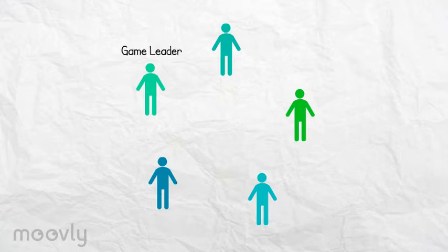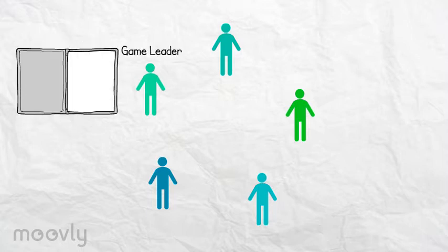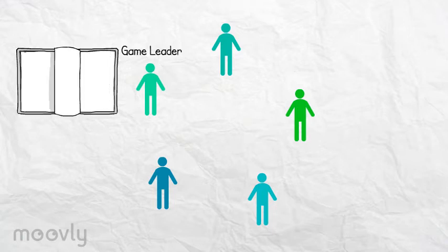The game leader chooses a word from a dictionary of which he has the idea that no one knows what it means. In this case he chooses the word abomasum.